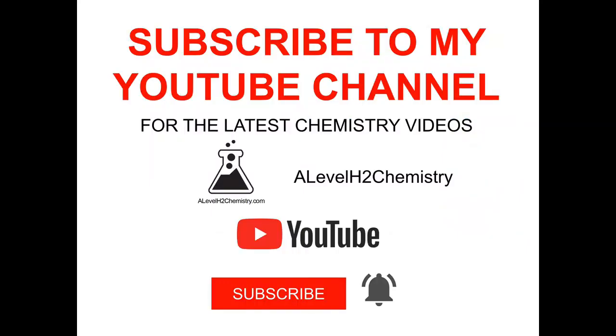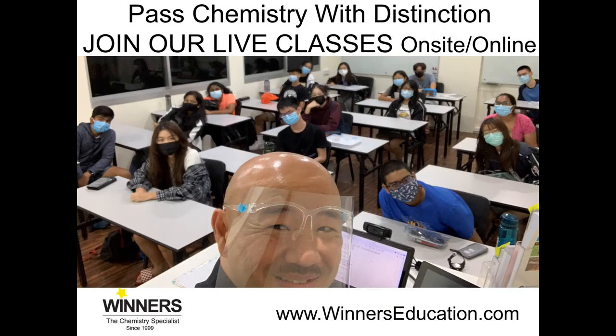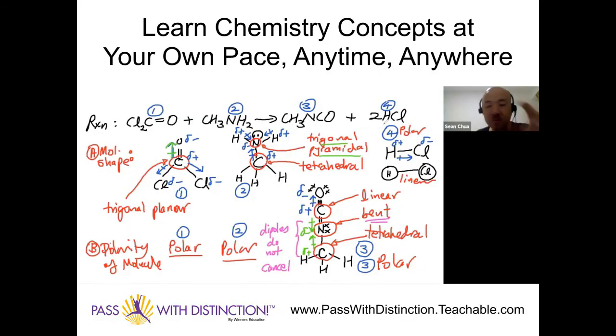If you'd like to catch my latest videos, click the subscribe button and the bell for instant notifications. To join my live chemistry classes and revision workshops, go to winnerseducation.com to find out how you can score distinction for chemistry consistently, either in our center or online via Zoom. Check out my online school at passwithdistinction.teachable.com to learn chemistry at your own pace, anywhere in the world, topic by topic. This is Sean Chua from Winners Education to your distinction in chemistry.